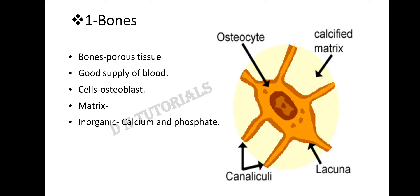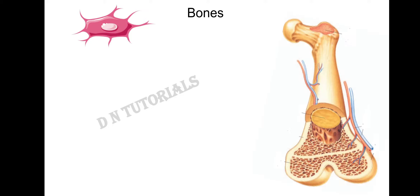The matrix of the bone consists of inorganic and organic substances. Inorganic substances are the salts of calcium and phosphate, and the organic substance is the protein ossein. Long bones have a marrow: yellow marrow and red marrow. Yellow marrow forms WBCs and red marrow forms RBCs.